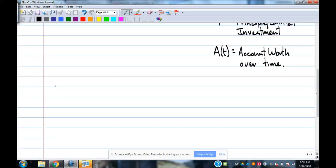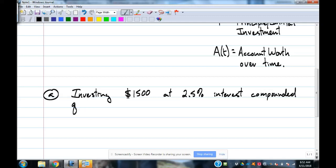All right. Let's work a problem. Let's say we're investing $1,500 at 2.5% interest compounded quarterly for four years.